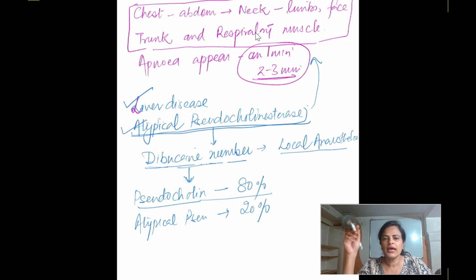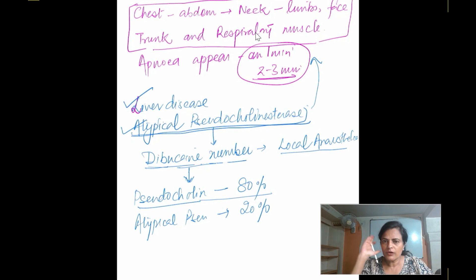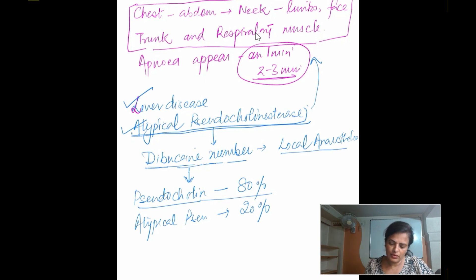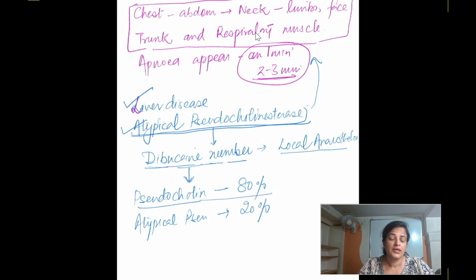In cases of liver disease or atypical pseudocholinesterase, succinylcholine is not metabolized and remains in the body longer, prolonging apnea. There is no antidote for this — you have to provide ventilation to the patient.